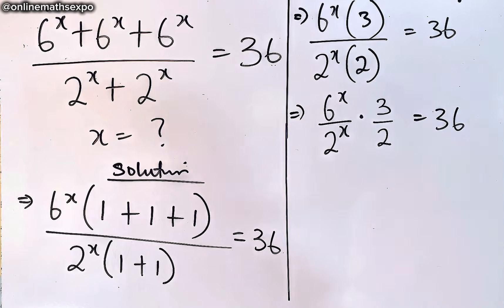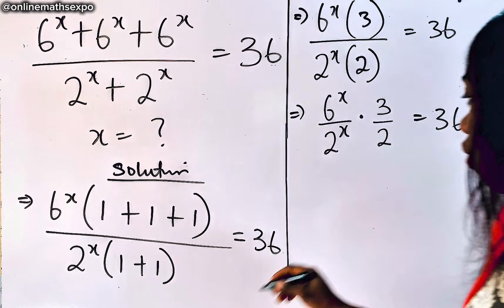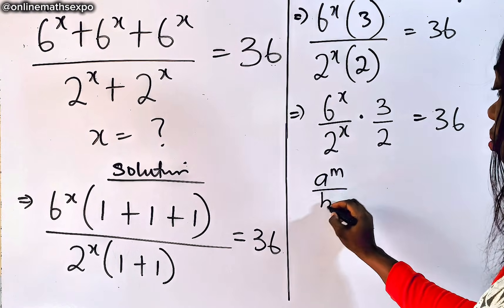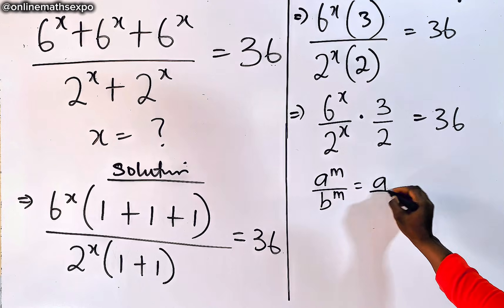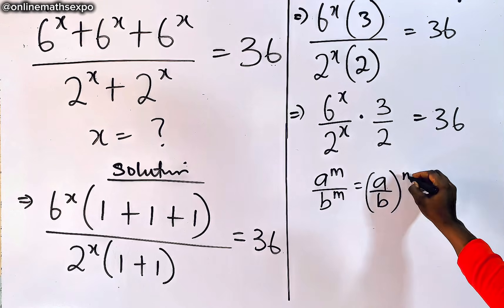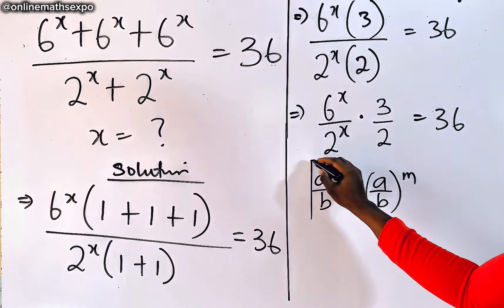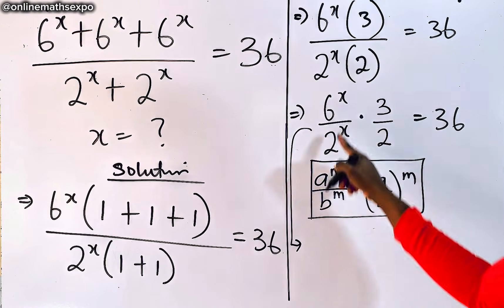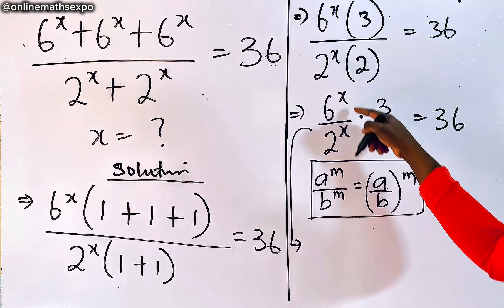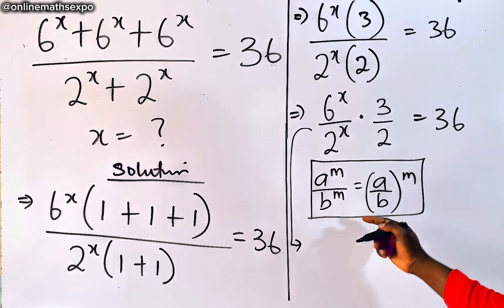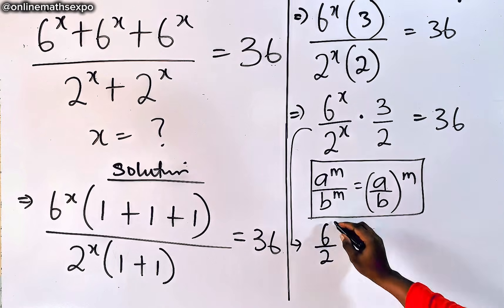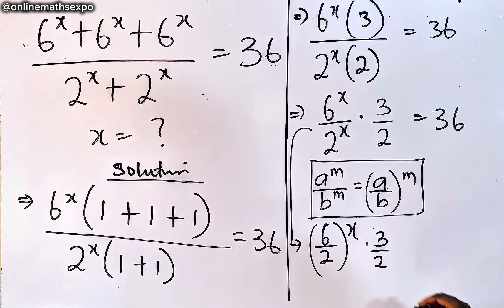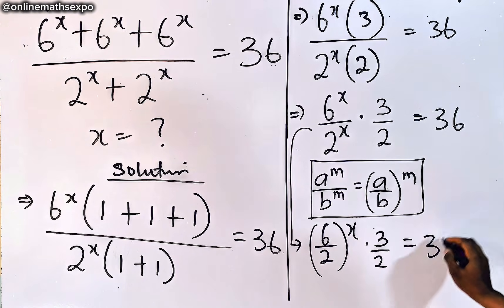Remember quickly: for every a to the power of m divided by b to the power of m, it equals a divided by b, to the power of m. So applying this rule here, since these two powers are the same, that gives us 6 divided by 2, to the power of x, multiplied by 3 over 2, which is equal to 36.